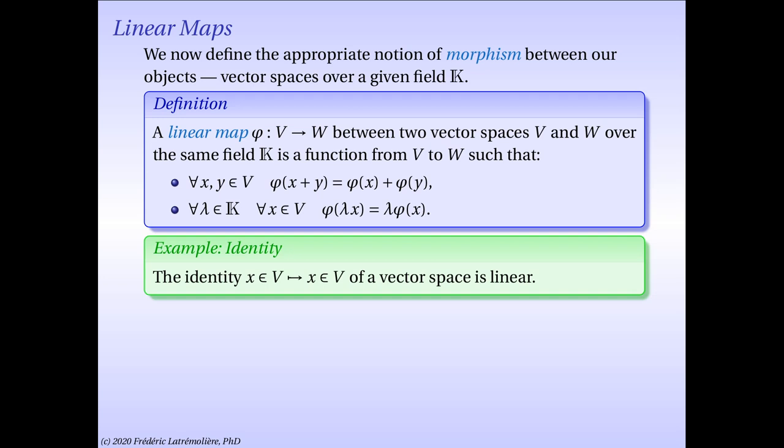There are some very simple examples of linear maps. The identity map of a vector space is always linear. Similarly, on a vector space, the function that maps any vector to the zero vector is also trivially linear.